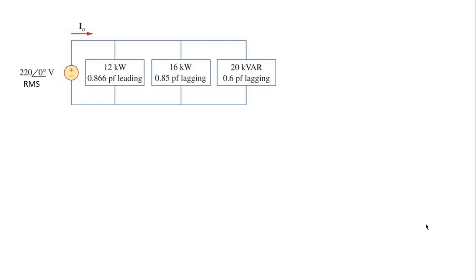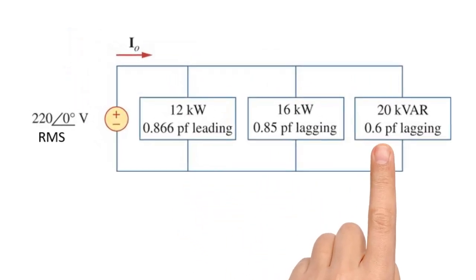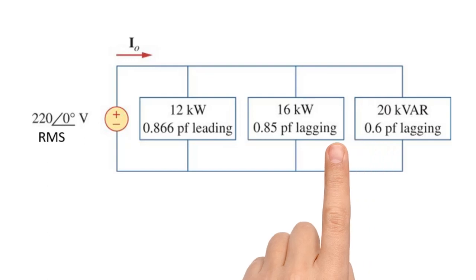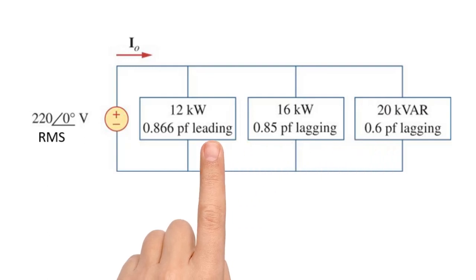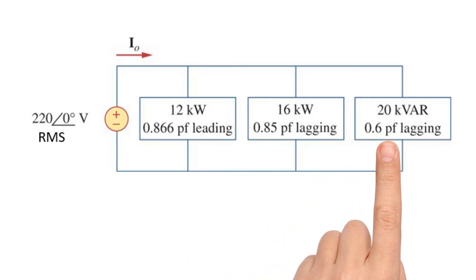The difference between this one and the previous one is just that the third load on the right is represented by the reactive power 20 kVAR and the power factor instead of just by the active power and the power factor as the other two. The first load is a capacitive load and the other two are inductive loads given that the first one is leading and the other two are lagging.